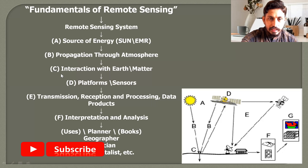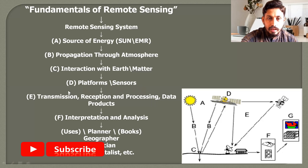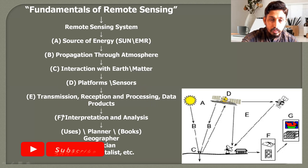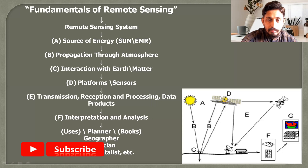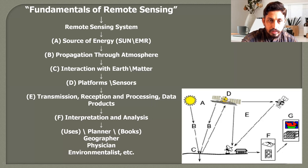The second step is how electromagnetic radiation or solar energy penetrates through the atmosphere. The third important step is interaction with the earth and the matter on the earth surface, since solar energy has different kinds of interactions with different materials — we need to study those interactions to identify objects on the ground. Then we consider platforms and sensors used for aerial photography or imaging, followed by transmission, reception, processing of data products, interpretation and analysis, and finally the applications used by planners, geographers, physicians, and environmentalists.